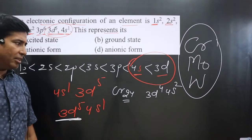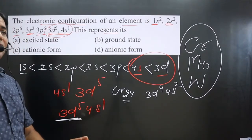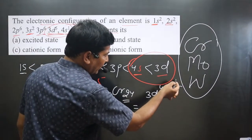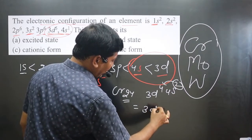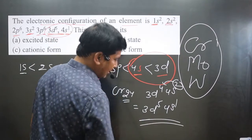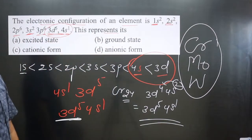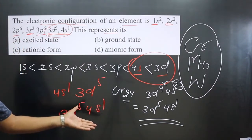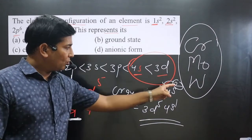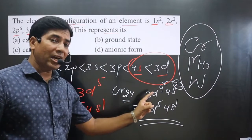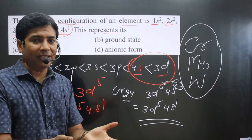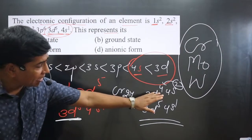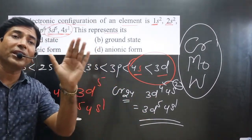But if we apply the stability rule, half-filled is more stable than partially filled. The configuration 3d4 4s2 is partially filled, so one electron from the 4s orbital is pulled to give 3d5 and 4s1, which is a more stable configuration. We did not supply any energy; this situation takes place automatically and spontaneously, because the electron arranges itself to be in the most stable state.